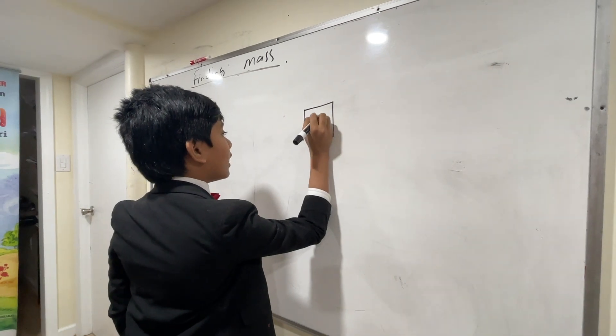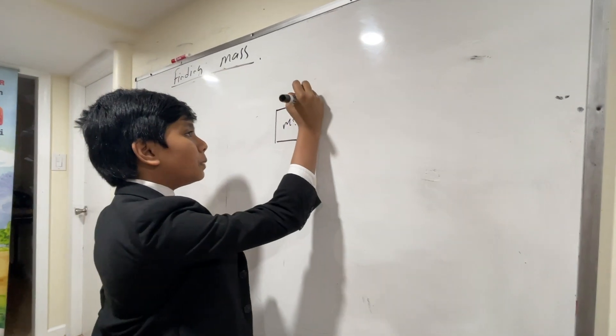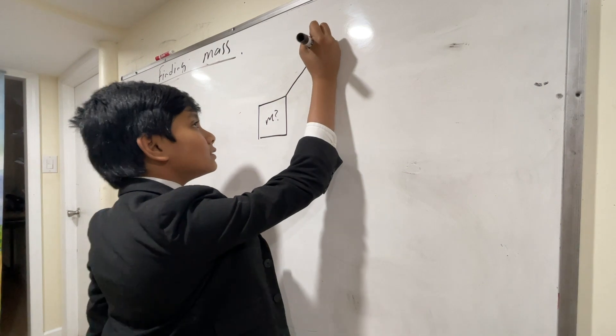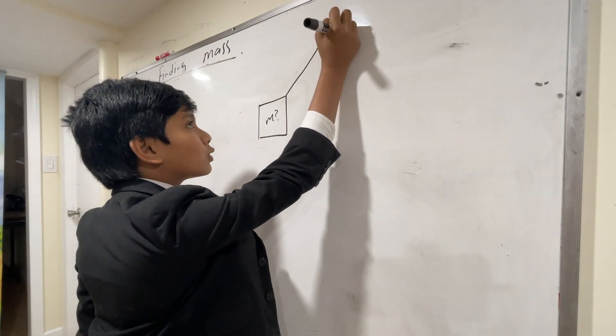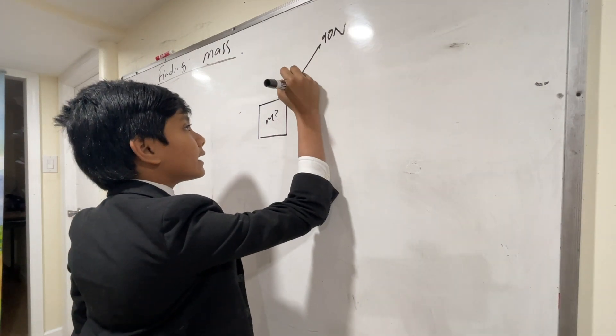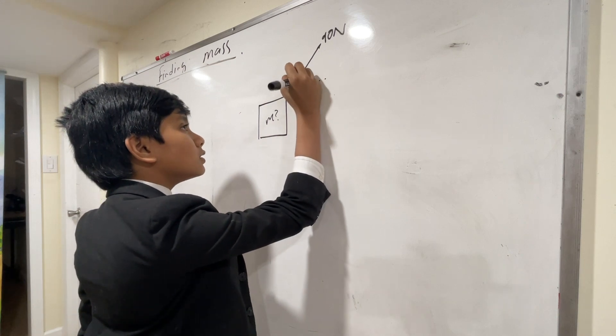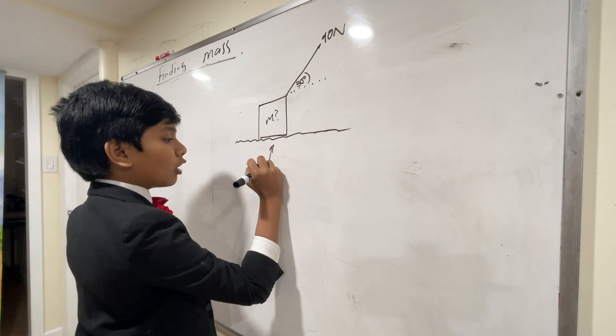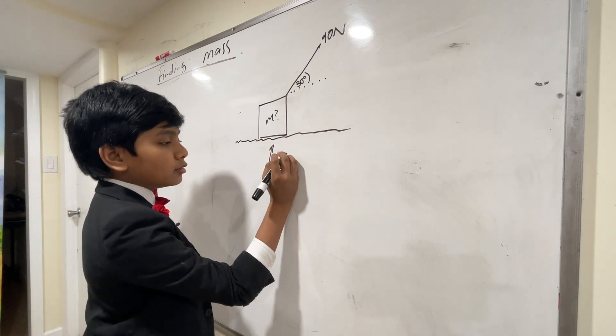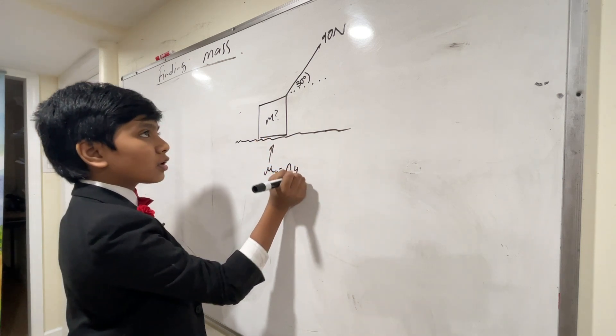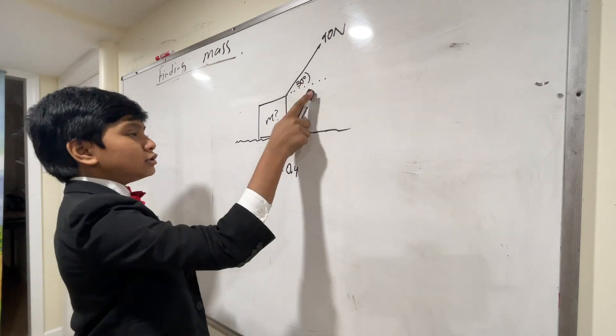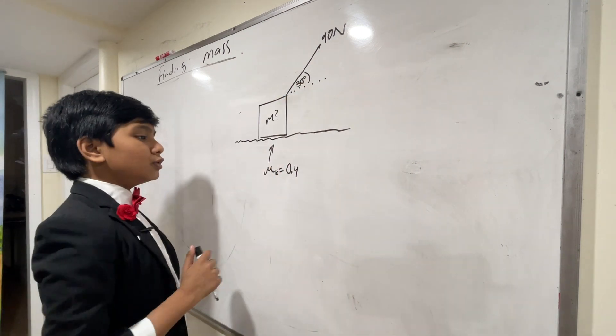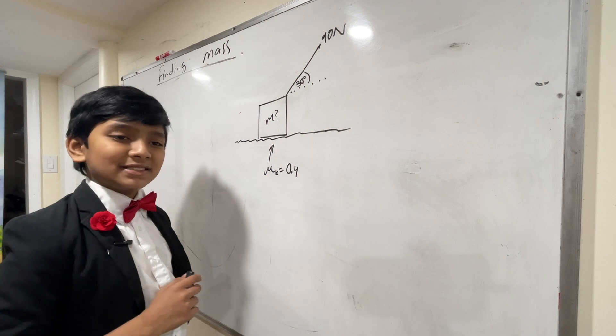So this box is of unknown mass, but you pull it with exactly 90 Newton force in this direction at 30 degrees. You are told that the surface it is on has a coefficient of friction, mu k, of 0.4. Once you pull it with this force, it starts moving at constant velocity.